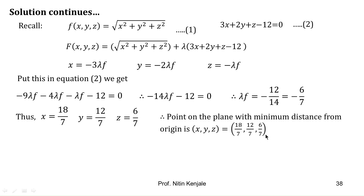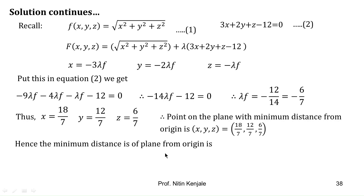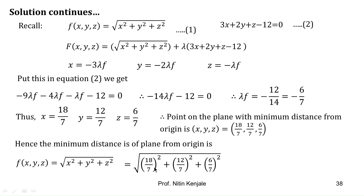Substituting this stationary point into f gives the minimum distance: √((18/7)² + (12/7)² + (6/7)²) = √(72/7). I hope you understood this example. Now let us proceed to the next one.